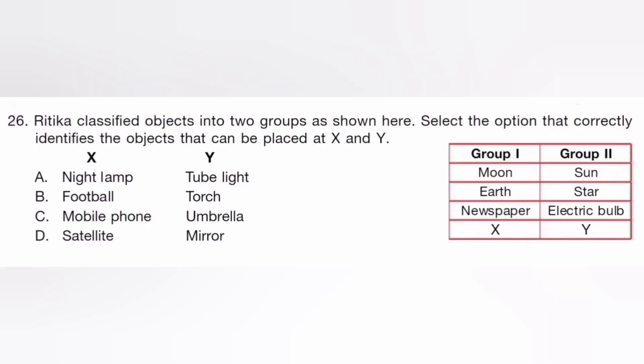Ritika classified objects into two groups as shown here. Select the option that correctly identifies the objects that can be placed at X and Y. The answer is B. X is football and Y is torch.